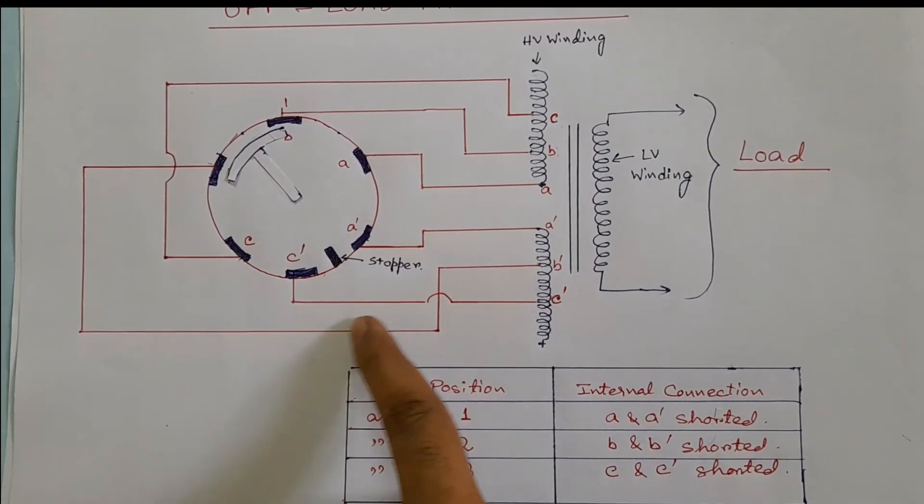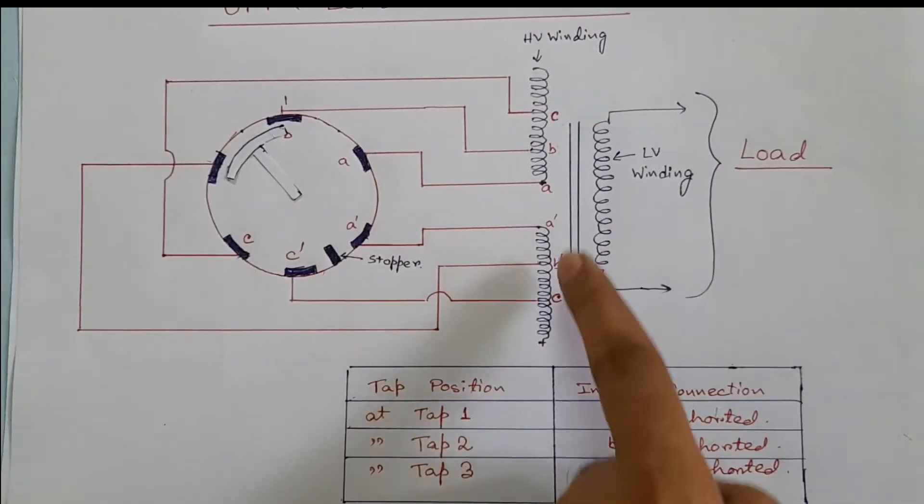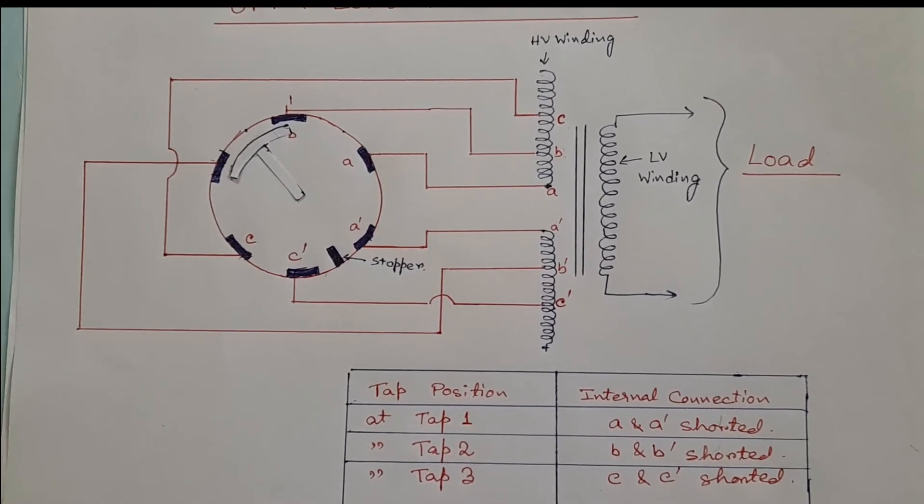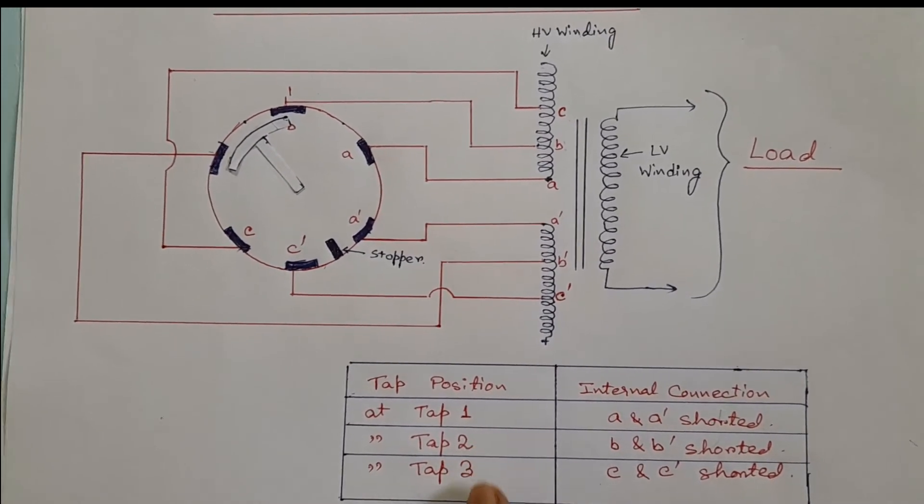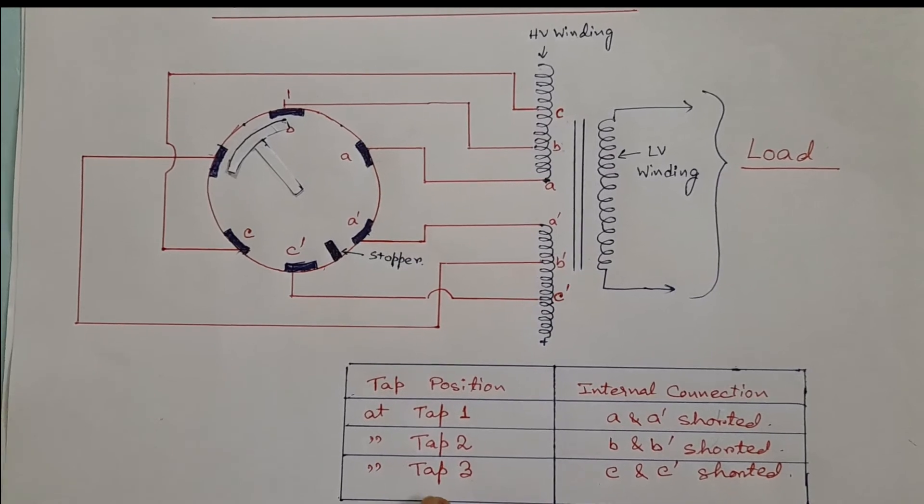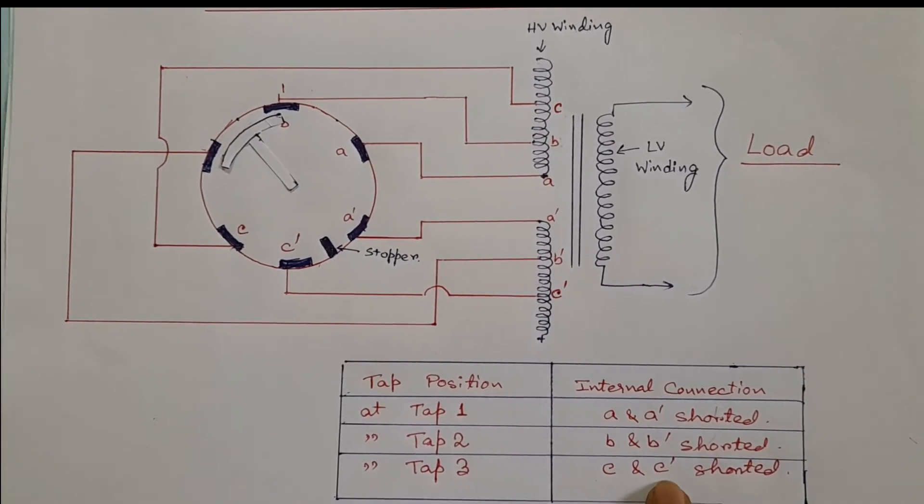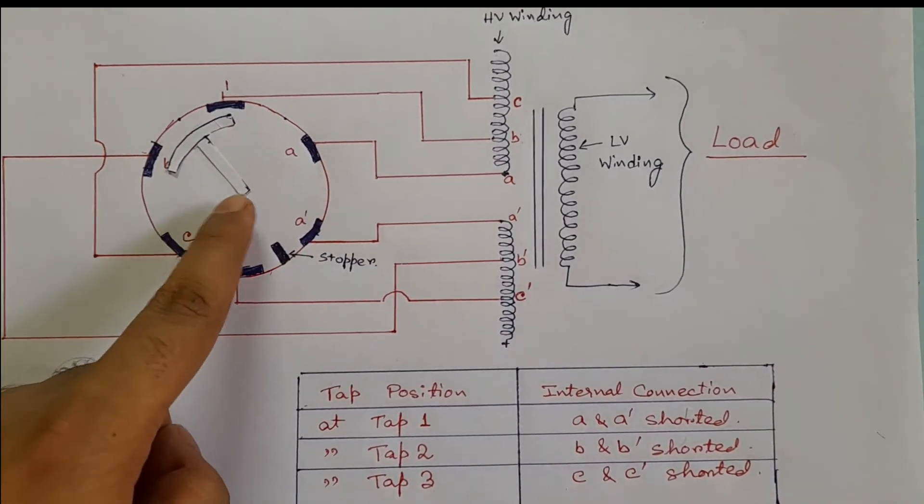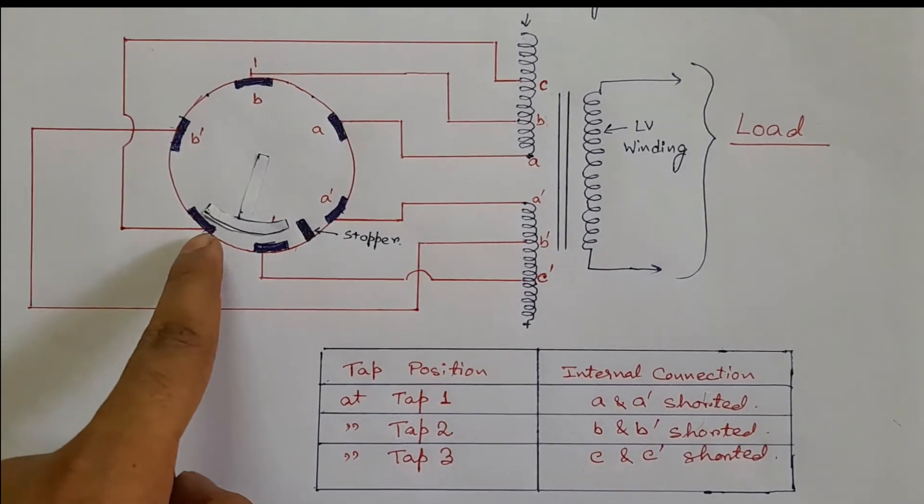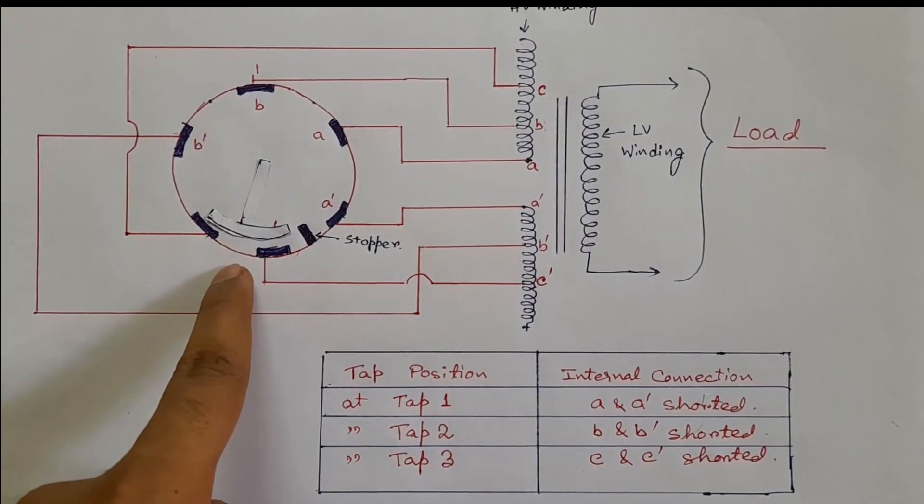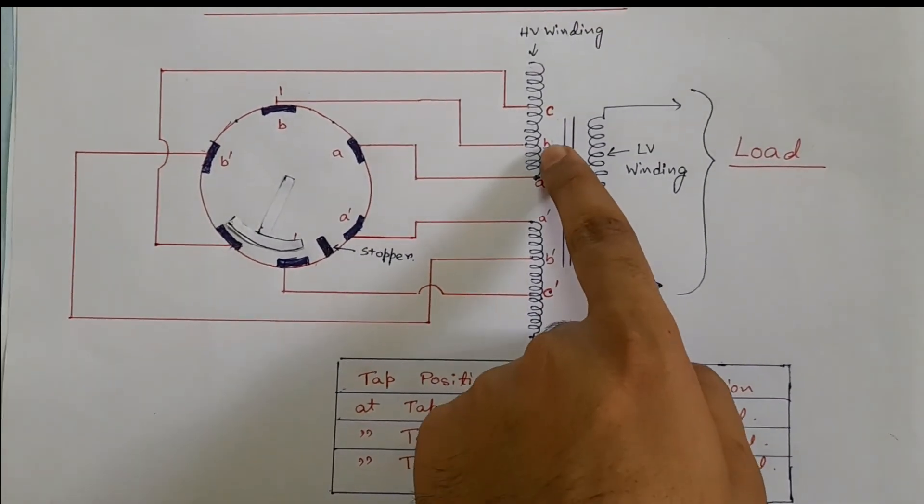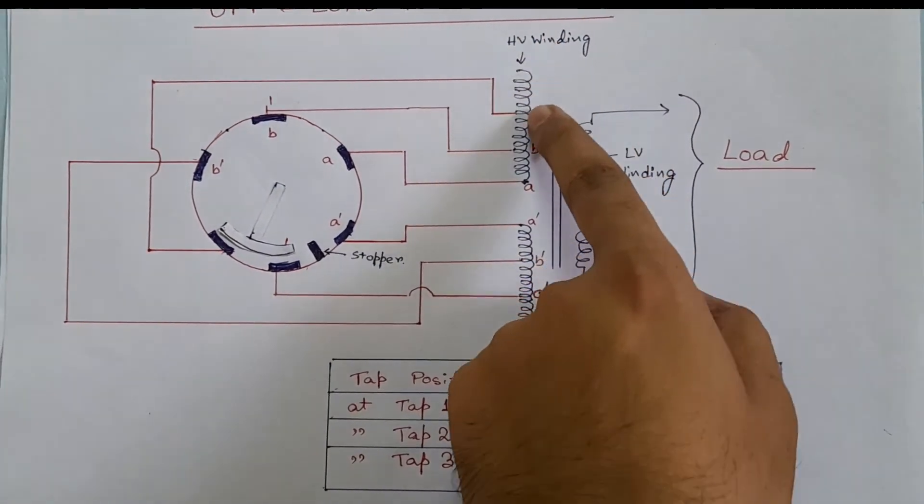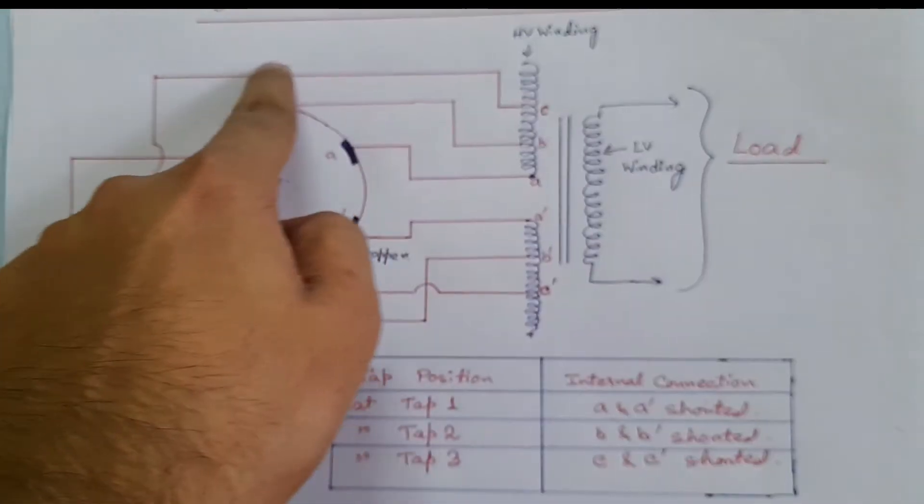So a path is established and upper and lower windings are connected. Similarly, if we want to change tap position from two to three, then at tap position three, C and C' should be shorted. So this rotary switch will rotate and short C and C' terminals. A connection between upper and lower winding is again established and now the HV current will flow through this path.